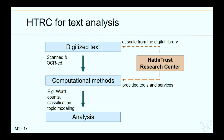In a basic text analysis workflow, the researcher gathers digitized text that's been scanned and OCR'd — optical character recognition — then applies computational methods to the text, such as comparative analysis and word counts, to start discerning patterns. Then they analyze the results with algorithms. The HTRC — HathiTrust Research Center — allows researchers to gather text at scale from the HathiTrust Digital Library and provides tools and services to apply computational methods to those texts.